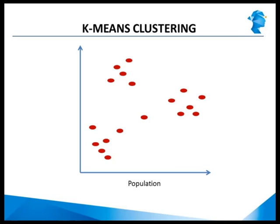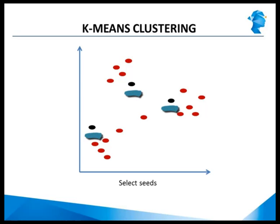The first step is for the algorithm to identify three seeds. It does this by taking three random observations from the dataset and assigning them as seeds. These three observations are now marked in black on the graph. The next step is to assign all the other observations to one of these three seeds based on their proximity.